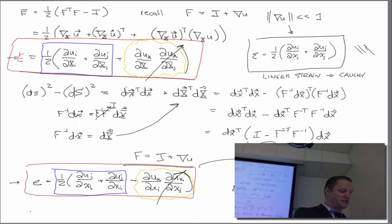So with respect to the Lagrangian strain, or the Green strain, these derivatives are with respect to the reference configuration, so that's big X.